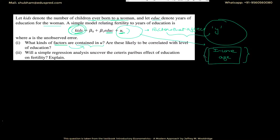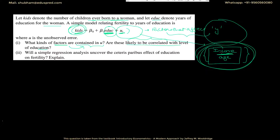The next question is: are these factors likely to be correlated with the level of education? The answer is yes. This is a theory question — we don't have data to find the correlation, so our answer must be a logical explanation. Education and income are going to be positively correlated because we expect both to move together: high education level tends to accompany high income, and low education tends to accompany low income. So yes, there are factors in U that are correlated with the level of education.